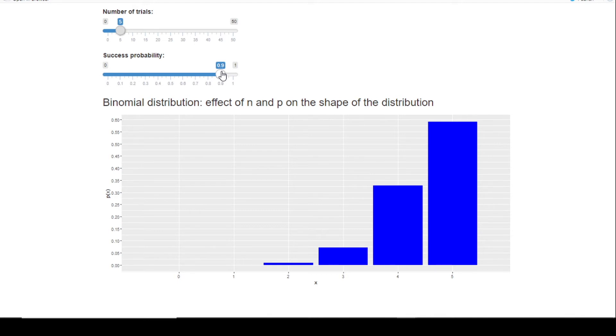So when my p is small, my distribution is skewed to the right or positive skew. When my p is close to 0.5, it's more symmetrical. And when my p is close to 1, then my distribution becomes negative skew or skewed to the left.